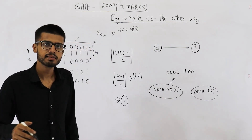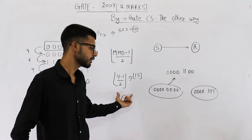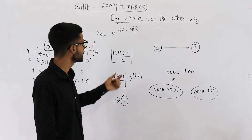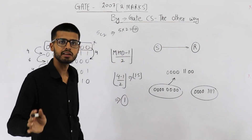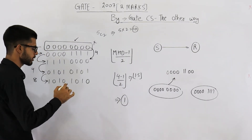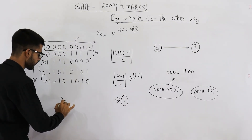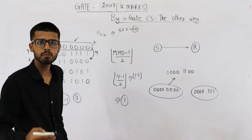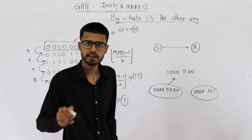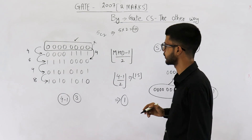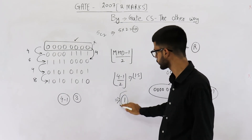How many bit errors can be detected? We can correct only one bit error. How many errors can be detected? You can detect MHD − 1 errors. The minimum Hamming distance is 4, and 4 − 1 is 3. That means up to three-bit errors can be detected and up to one-bit errors can be corrected. So the answer to this question is one.